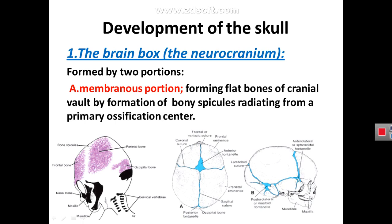The brain box itself, the neurocranium, can be divided developmentally into two regions: first, the cranial vault, and second, the base of the skull. The base of the skull, from below, forms the base of the skull, while from above it forms the cranial cavity. We will discuss the neurocranium in two parts: the brain cup (first part) and the base of the skull (second part).